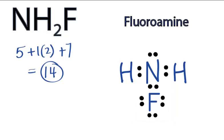So we've used all 14 valence electrons for the NH2F Lewis structure, and we've satisfied the outer shells for each of the atoms involved. This is Dr. B with the Lewis structure for NH2F, and thanks for watching.